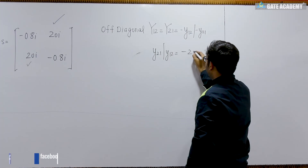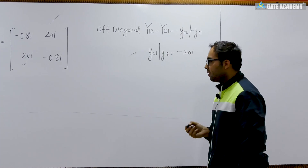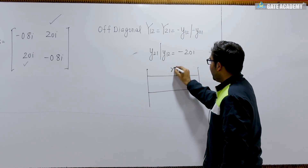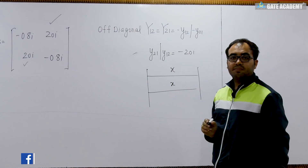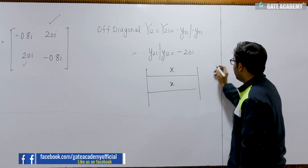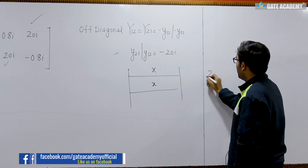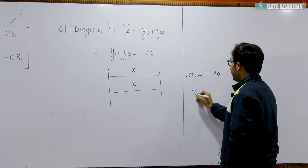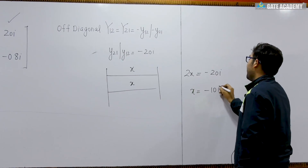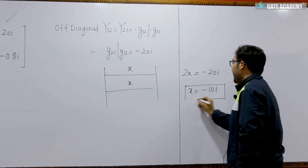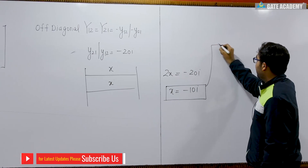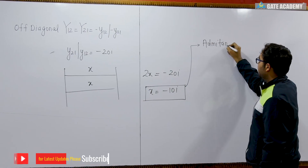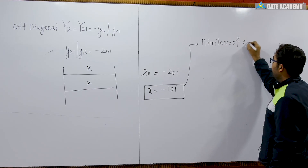So the small y₁₂ or y₂₁ should be equal to minus of 20. Now, two transmission lines are connected in parallel, each having admittance x. So the total admittance will be equal to 2x, and it is given that this equals minus 20j. So the value of x is minus 10j — this is the admittance of each line.